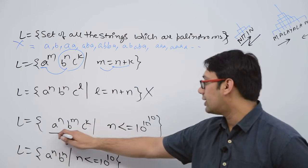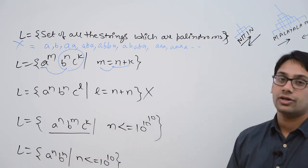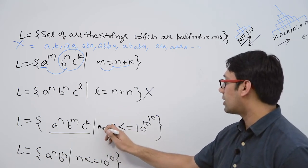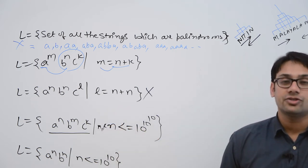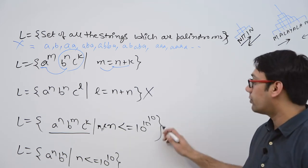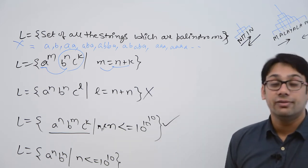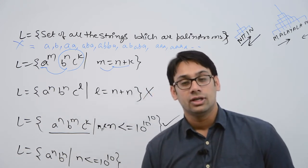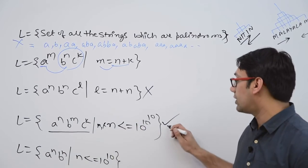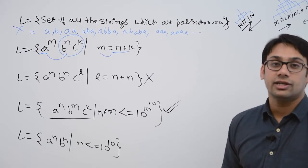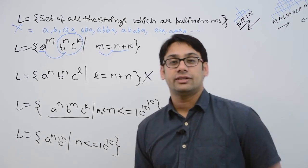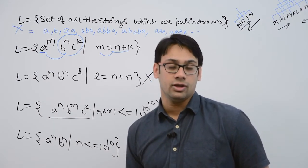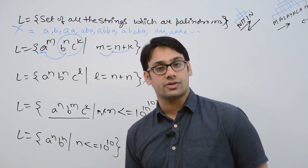Now consider a raised to the power n, b raised to the power m, c raised to the power k, where n, m, k are each less than or equal to 10 raised to the power 10 raised to the power 10. For this, a finite automata is possible — it will contain a very large number of states, but still a finite automata is possible. Therefore, for this language, you can give a regular expression, though writing that regular expression will take you ages. But it is possible.